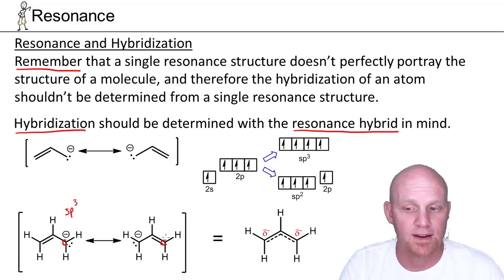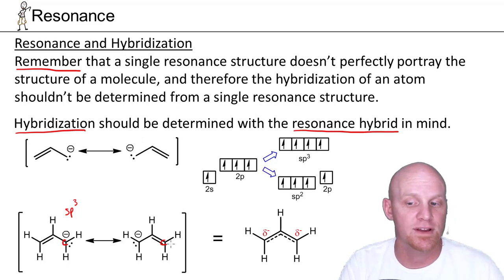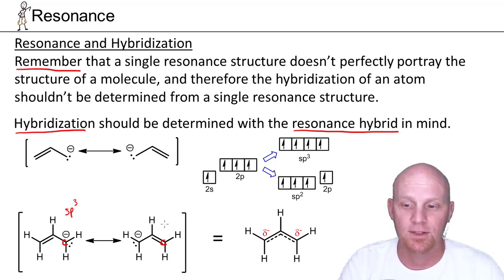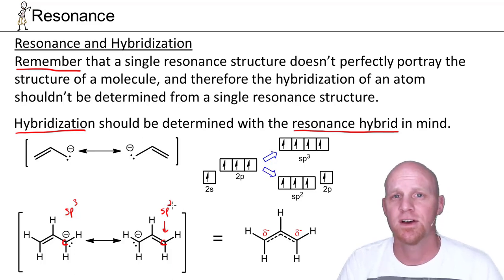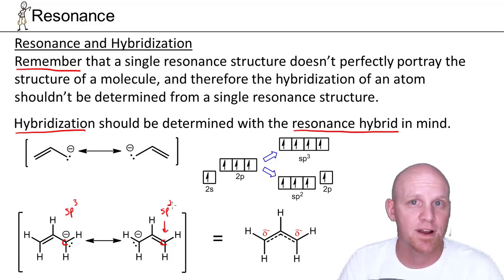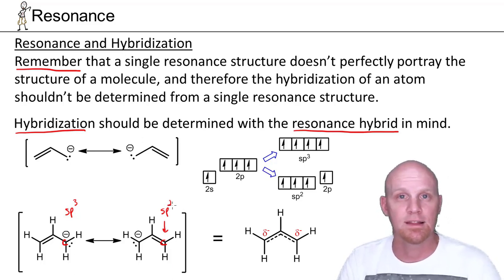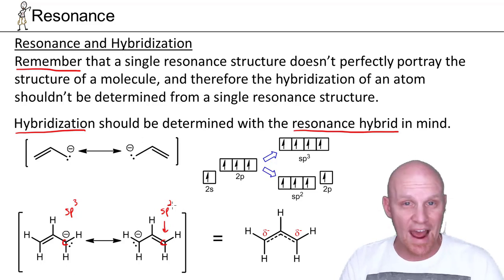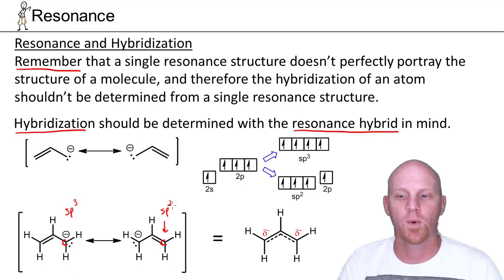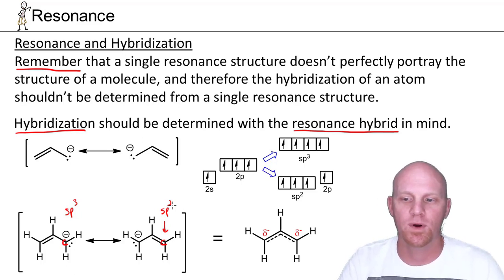But in the structure on the right, it looks like it only has a steric number of three — three electron domains, three sigma bonds, no lone pairs — and looks to be sp2 hybridized. So the question is: is it really sp3 hybridized, or is it really sp2 hybridized, or something like sp2 and a half — what's really going on here?